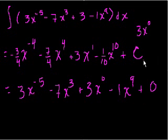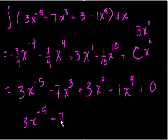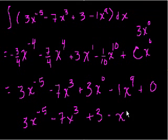Right? You could almost view this constant as some number times x to the 0. And if you took the derivative, well, you multiply the 0 times c, and you get 0. OK, I'll stop digressing. We get a 0 here. And if you simplify that, that just equals 3x to the minus 5 minus 7x to the 3rd plus 3 minus x to the 9th.